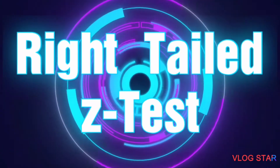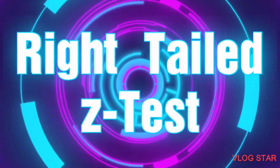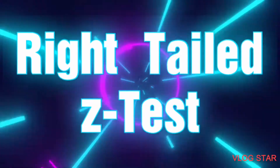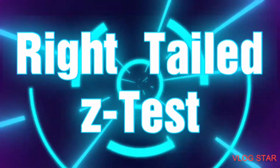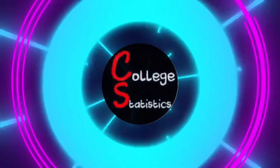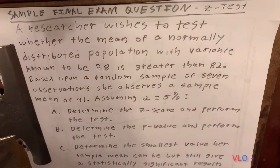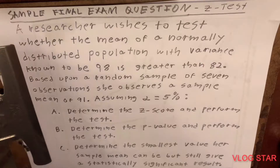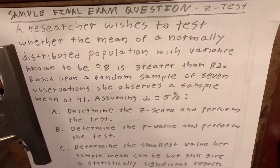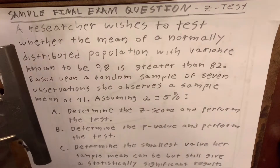The right-tailed Z-test: testing the mean of a normal distribution when the standard deviation is known. A researcher wishes to test whether the mean of a normally distributed population with variance known to be 98 is greater than 82.